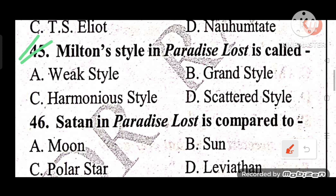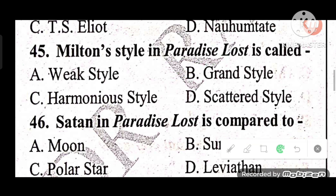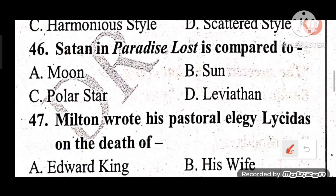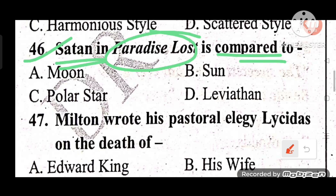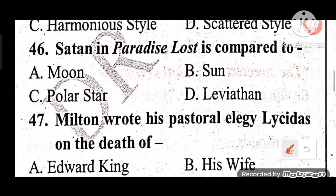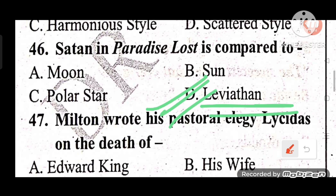Question 45: Milton's style in Paradise Lost is called what? The answer is Grand Style. Question 46: In Paradise Lost, Satan is compared to what? Options: Moon, Sun, Polar star, Leviathan. The answer is D — Satan is compared to Leviathan.